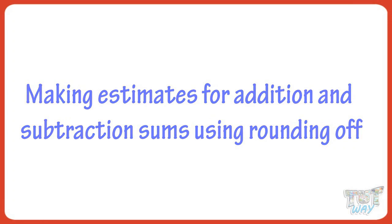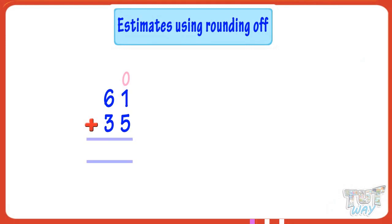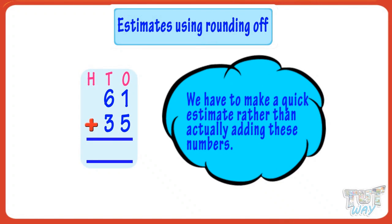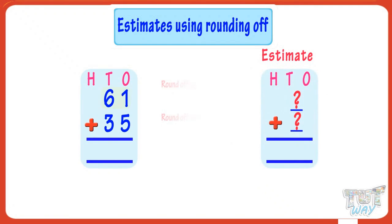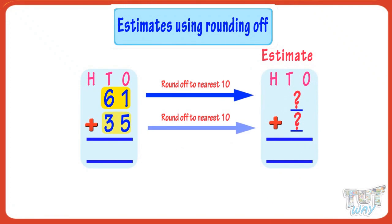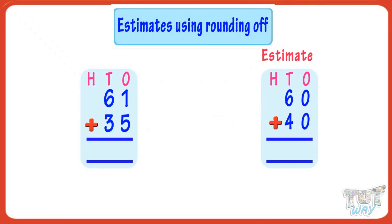Let's get started. We have to add 35 and 61. We have to make a quick estimate rather than actually adding these numbers. For that, we will round off 61 and 35 to the nearest ten and then add them orally to get the estimate.